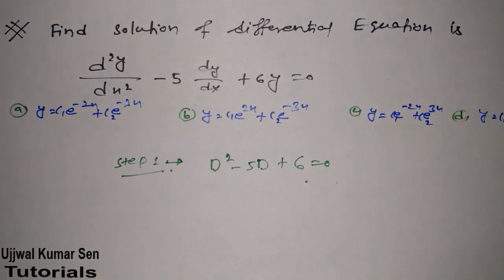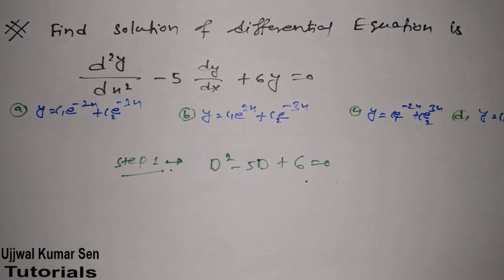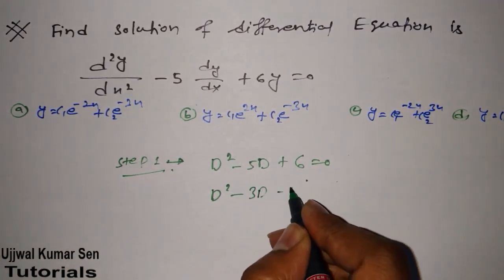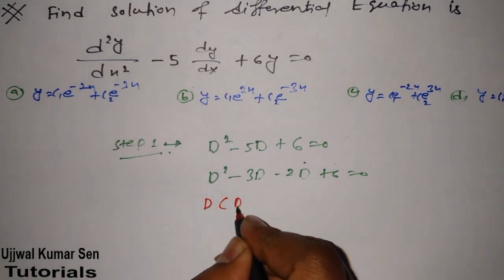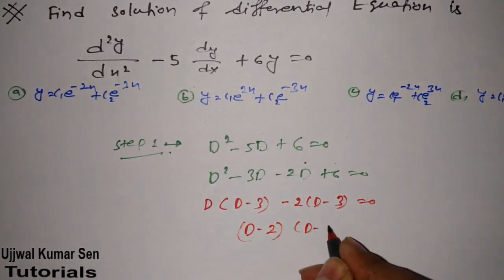This is the auxiliary equation. After writing it, we have to find the value of d. To do that, we factorize: 2 times 3 is 6, so we write d² minus 3d minus 2d plus 6 equals 0. Taking d as common: d(d minus 3) minus 2(d minus 3) equals 0. So we can write (d minus 2)(d minus 3) equals 0.